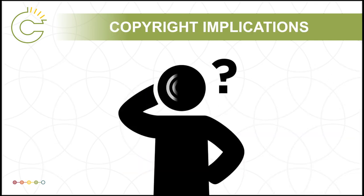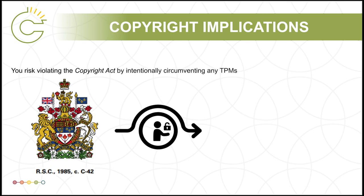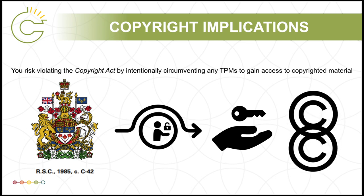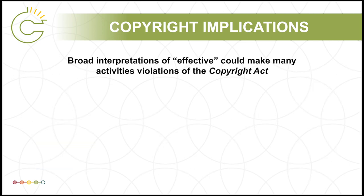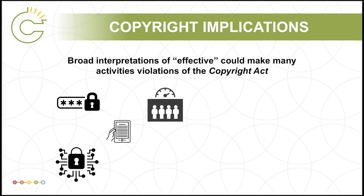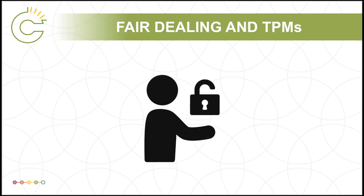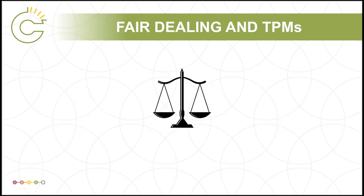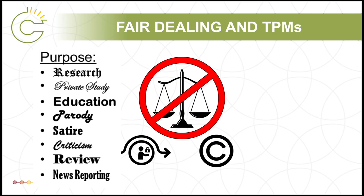So what does this mean for users of copyrighted material? In essence, you risk violating the Copyright Act by intentionally circumventing any technological protection measure to gain access to copyrighted material, whether or not you intend to copy it, unless you are relying on the very narrow exceptions in the Act. Broad interpretations of what an effective technological protection measure might be could lead several other activities that circumvent TPMs to be considered violations of the Copyright Act. Not only is TPM protection broad in that it covers both access controls and use controls, but users cannot rely on fair dealing as a valid defense to bypass or break a digital lock on copyright-protected material.